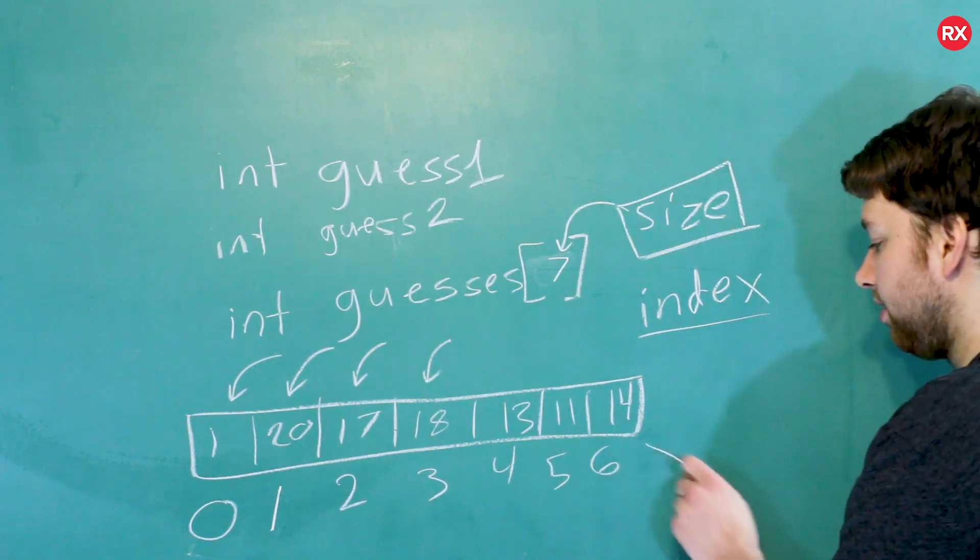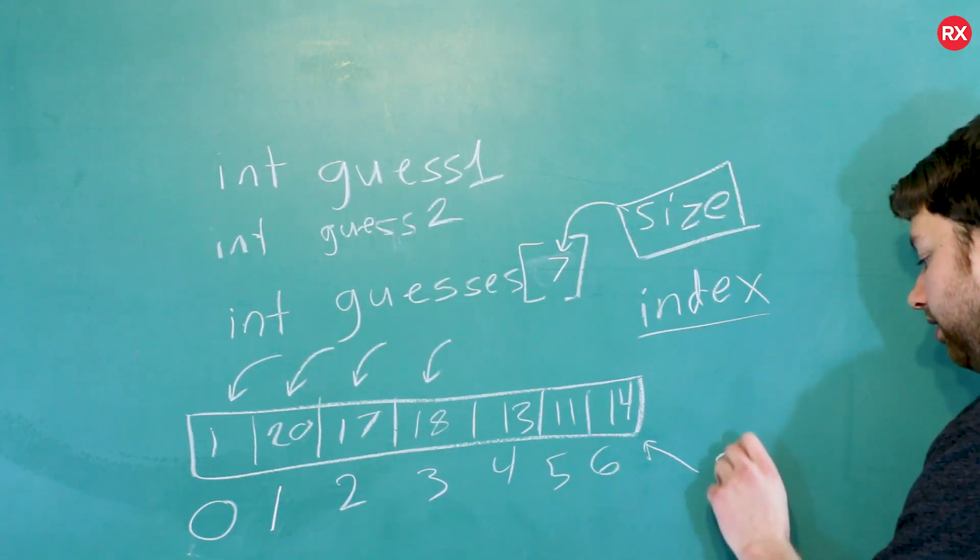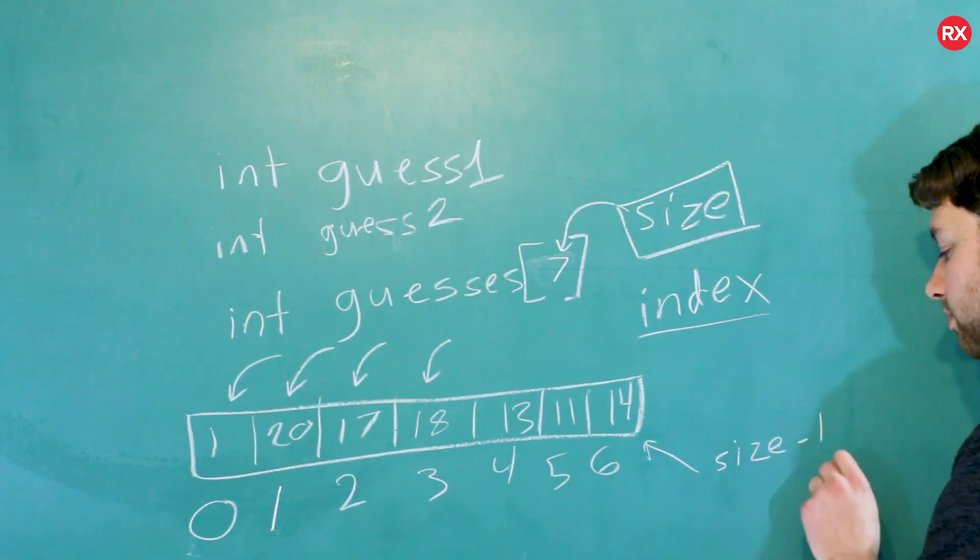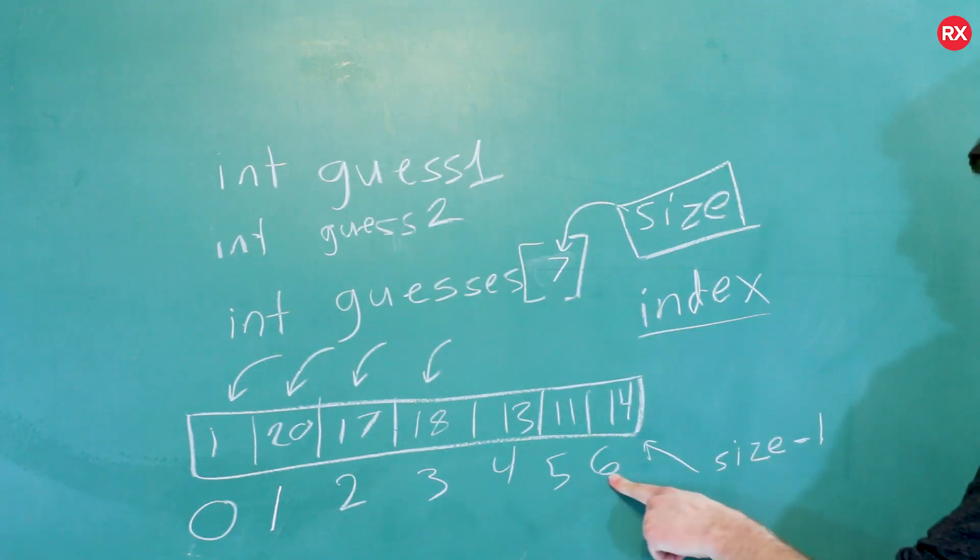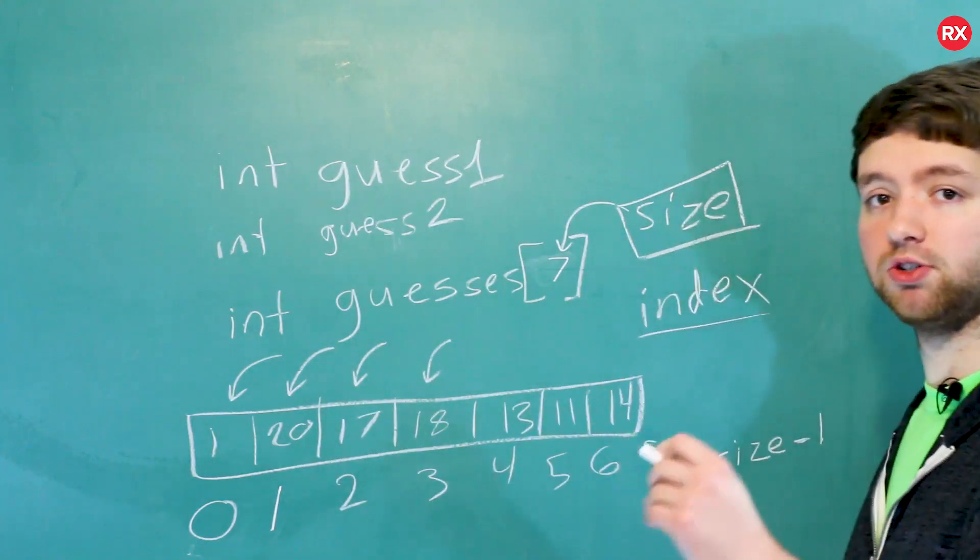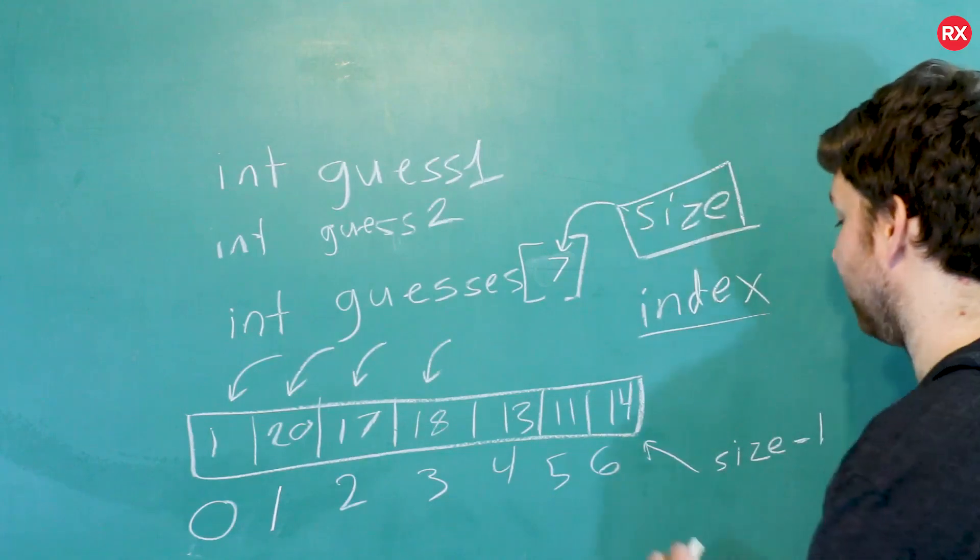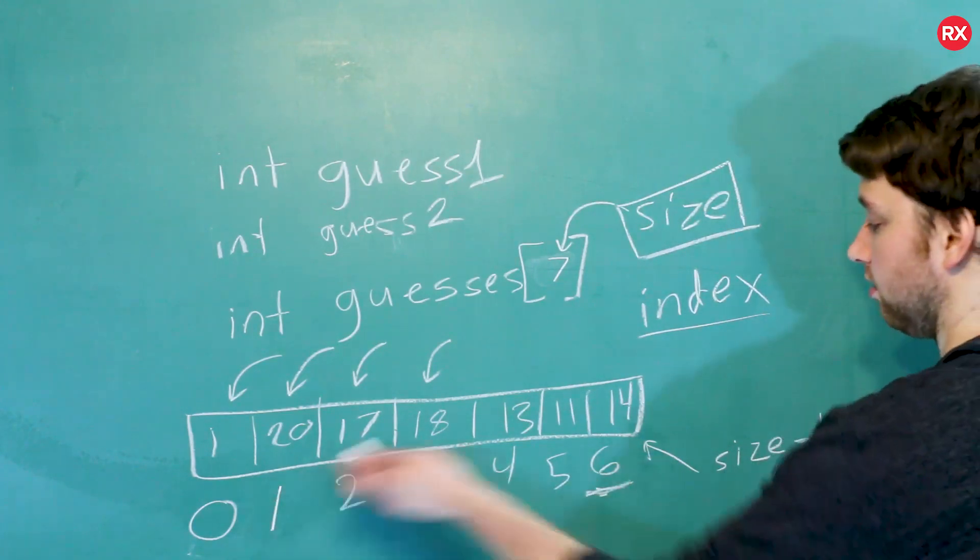So that last element there, it's going to have the index of size minus one, because size is seven, seven minus one is six. So keep that in mind. If you're going to go through this array, you don't want to go all the way up to size. You want to make sure you stop one before size. If you're working with indexes, which in this case we are, we have zero through six.